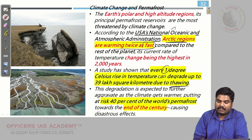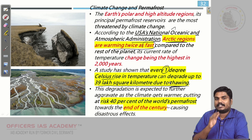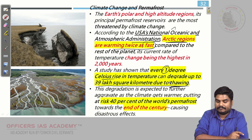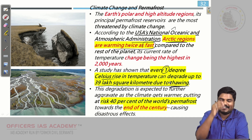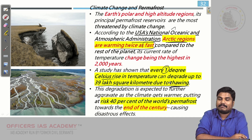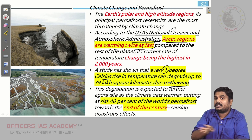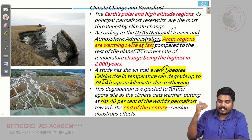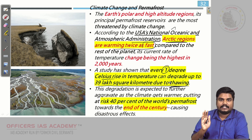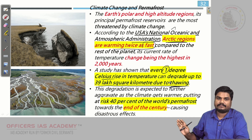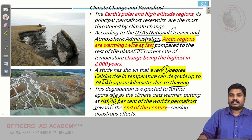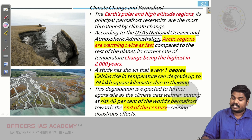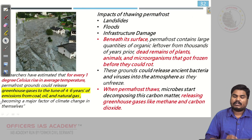Studies say that for every 1 degree Celsius rise, 39 lakh square kilometers of permafrost region can be degraded. If the current trend continues, in 100 years we will be witnessing a huge loss — 40% of the world's permafrost region will be at a huge threat.